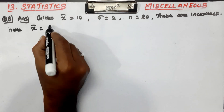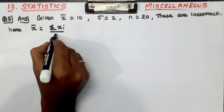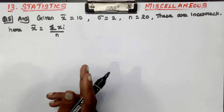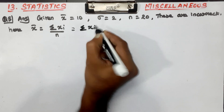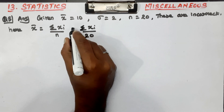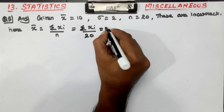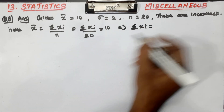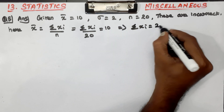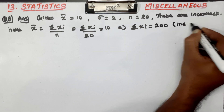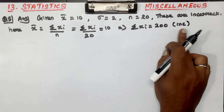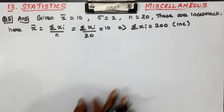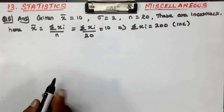x-bar = summation of xi divided by n. Summation of xi divided by 20 equals x-bar value 10. Which implies summation of xi equals 200. This is the incorrect sum of observations.